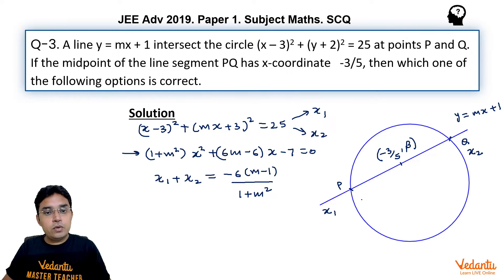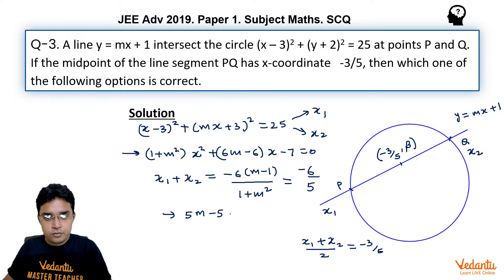Now, this x₁ plus x₂ can also be obtained by using midpoint formula for x-coordinates of P, Q and their midpoint. So (x₁ plus x₂) upon 2 should equal minus 3 upon 5. So I can write this x₁ plus x₂ as minus 6 upon 5. Now minus 6 will get cancelled and we get after cross multiplication 5m minus 5 equals 1 plus m² or m² minus 5m plus 6 equals 0.